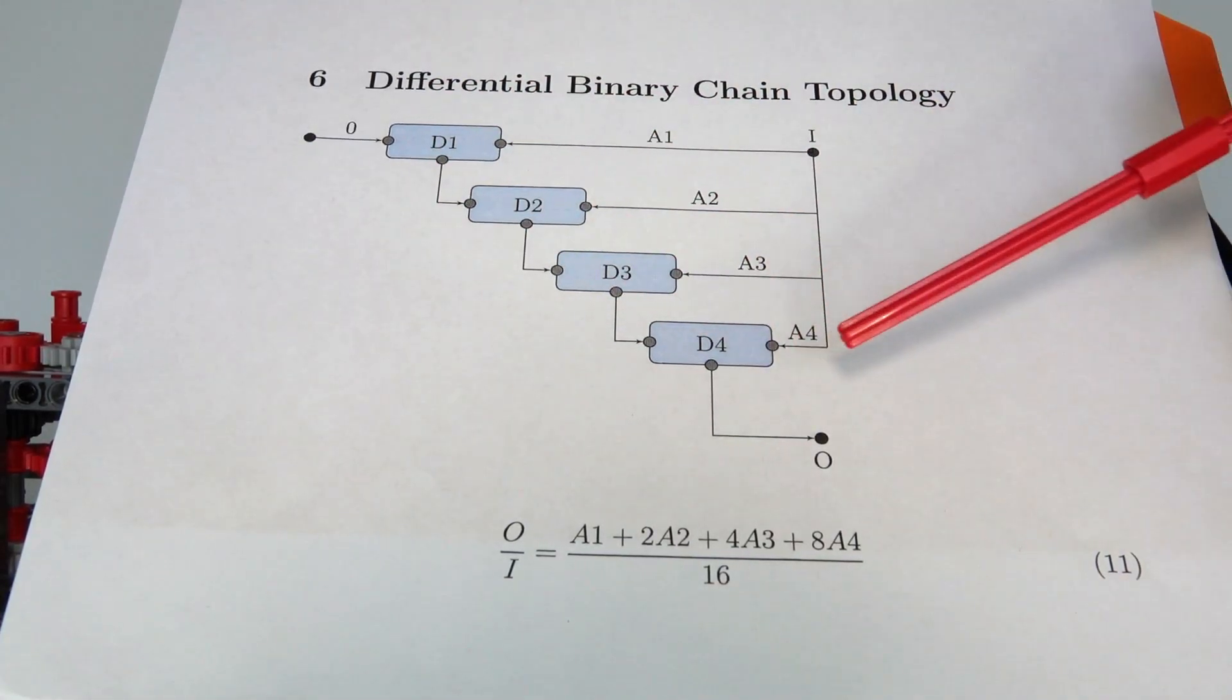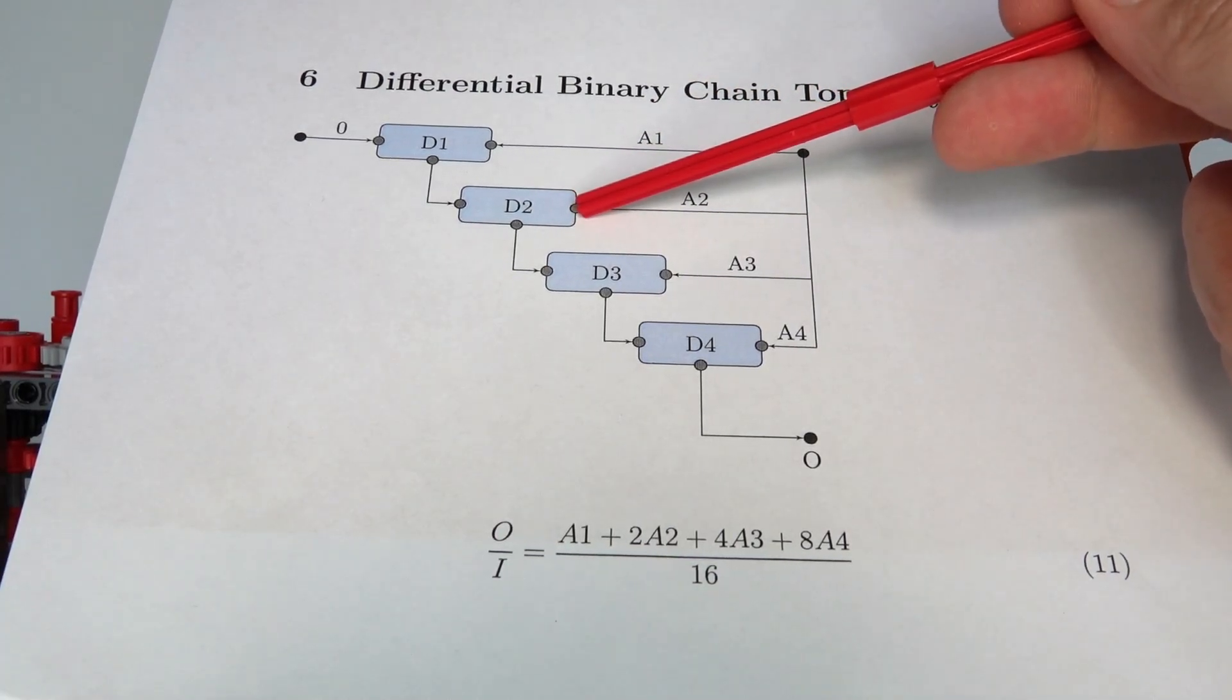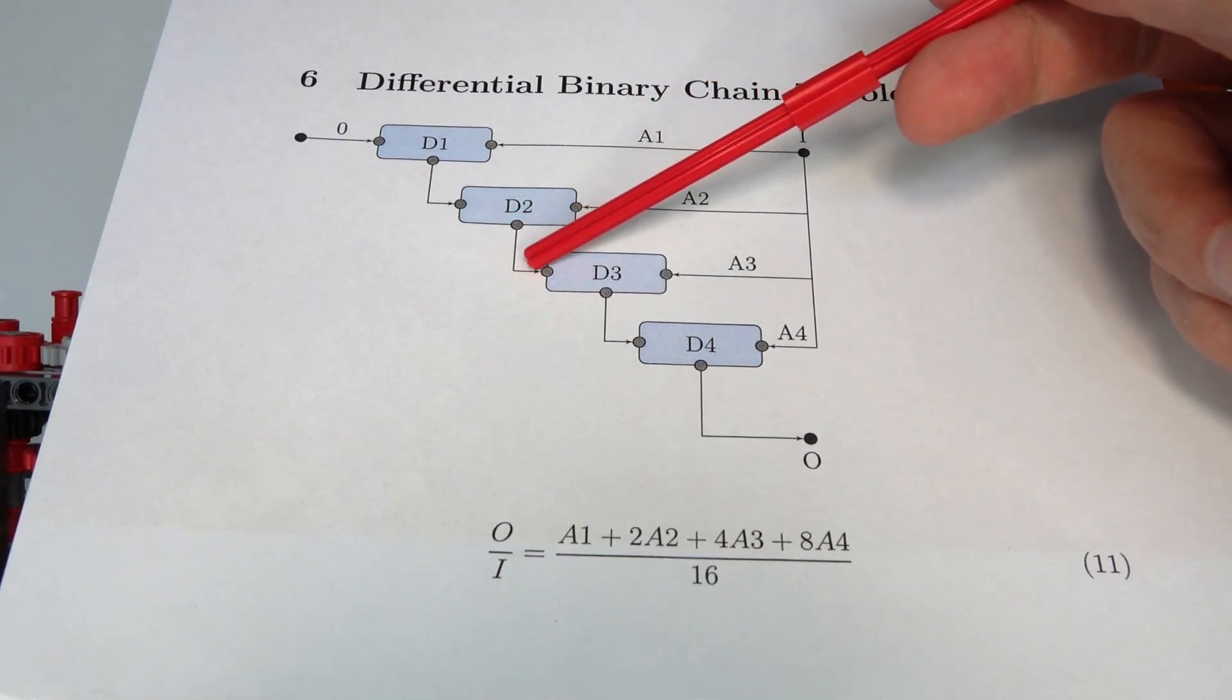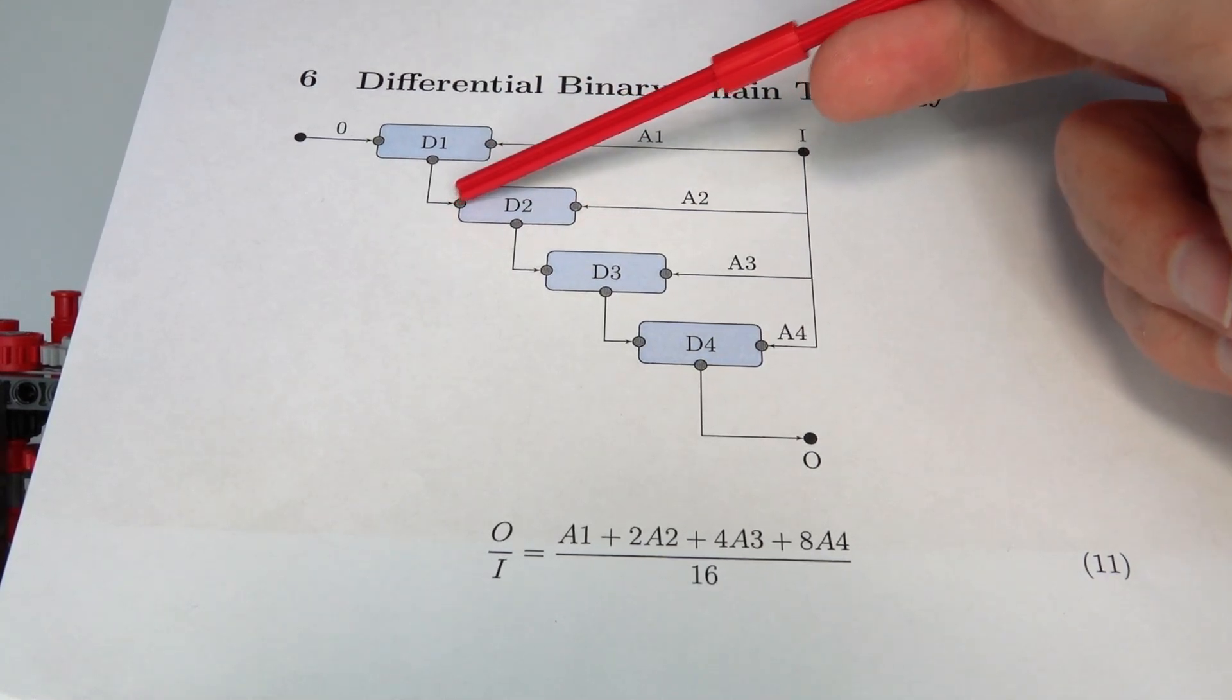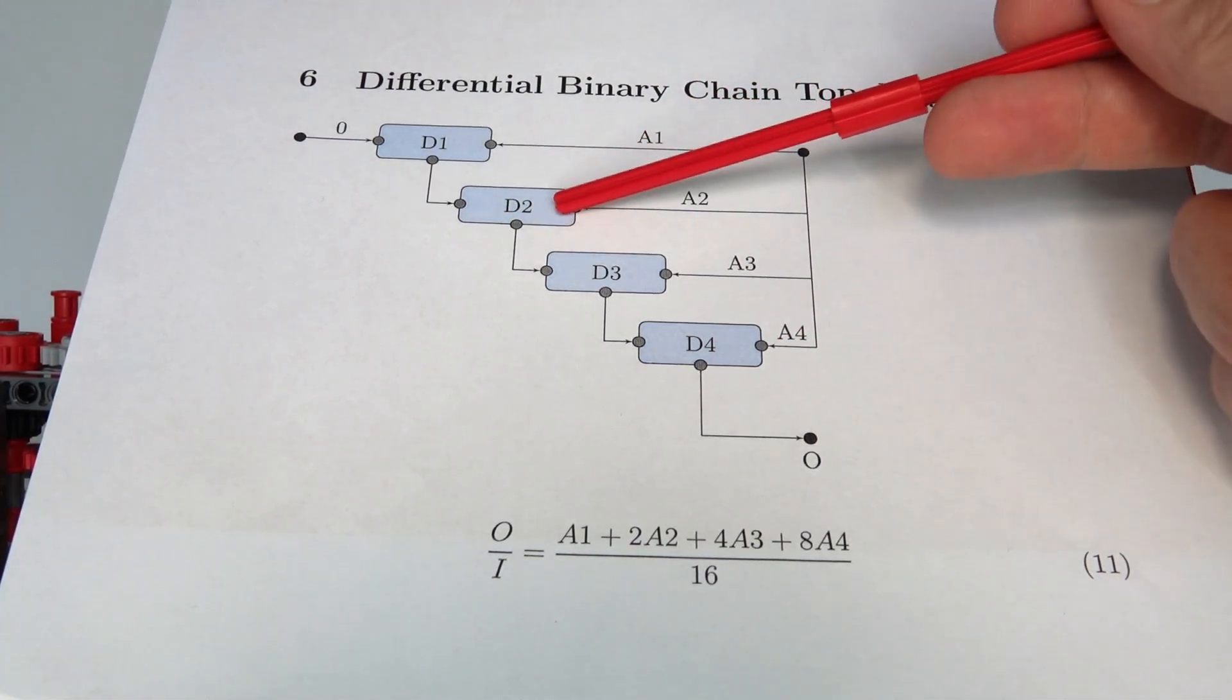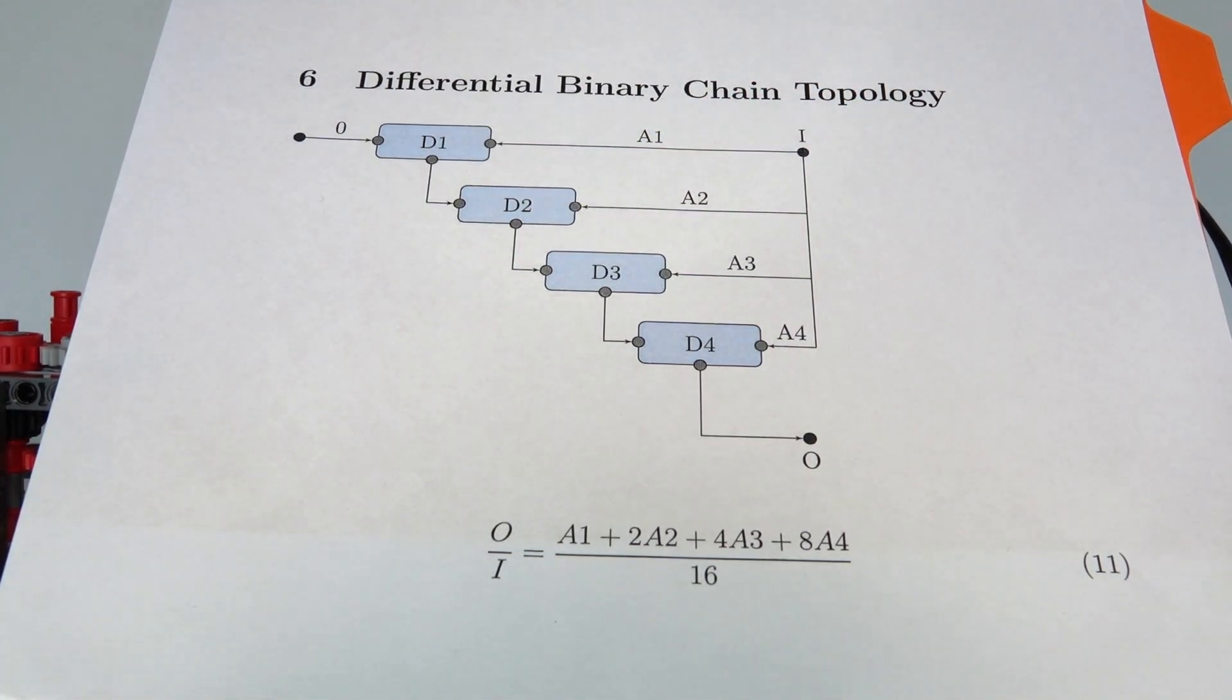One important point about this differential topology is that if one of the binary digits is equal to zero, that means it's independent of the input, and this point is simply held to zero. The relationship between input and output is simply a gearing ratio of a half, because the differential takes the average of the two inputs. In practice, every time there is a zero digit, you can eliminate one of the differentials and replace it with a gearing ratio of a half, and that's what I've done in my implementation.